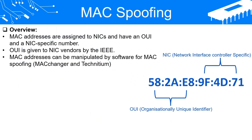MAC spoofing. Physical addresses, Ethernet addresses, or hardware addresses are alternative names for MAC — media access control — addresses. MAC addresses are usually composed of a 48-bit binary number and are allocated to a network interface card, NIC, by the manufacturer.